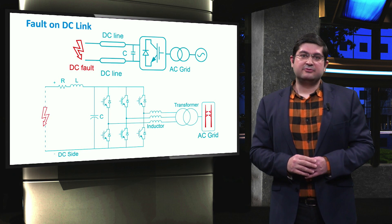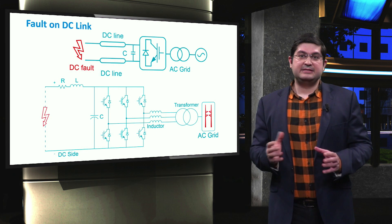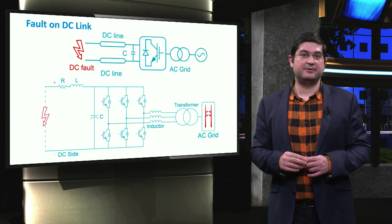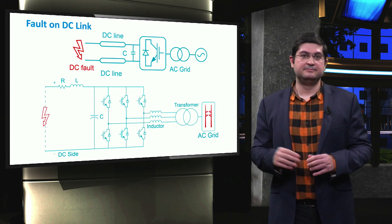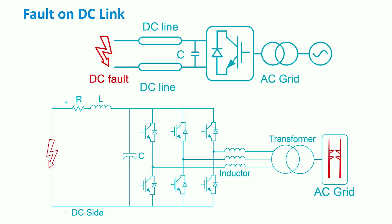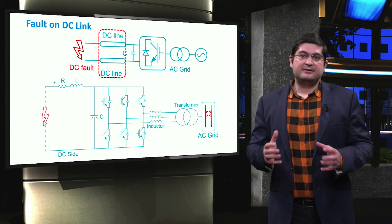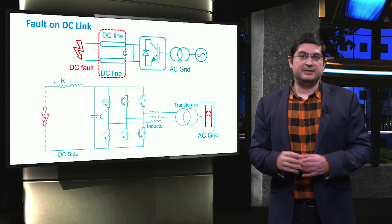Let's now look at the fault current of a DC microgrid which is connected to an AC grid through power converters. If the fault occurs at the DC side, then this fault current is provided by various elements, like the grid, the parallel capacitor of the DC link, and the inductor of the DC cables. The equivalent electrical circuit is shown in the figure below.